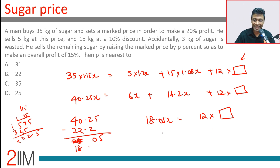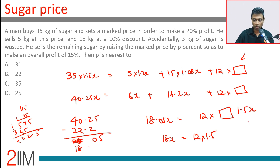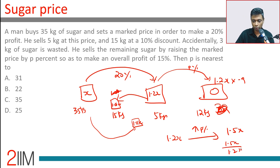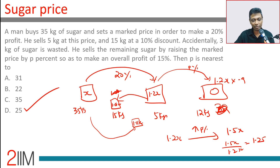Taking 18.05x ≈ 18x, we get 12 × 1.5x — so the selling price is approximately 1.5x. This 1.5x is obtained by raising the marked price of 1.2x by p percent. The ratio 1.5x / 1.2x = 5/4 = 1.25, meaning an increase of 25%. So p = 25%.